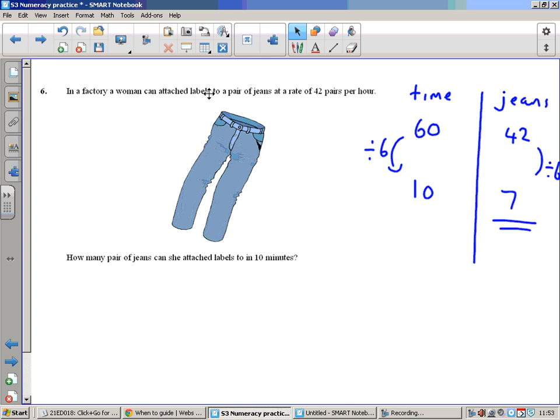In the factory, a woman can attach labels to a pair of jeans at a rate of 42 pairs per hour. How many pairs of jeans can she attach labels to in 10 minutes? So a whole hour she can do 42 pairs. Let's think about that in terms of minutes: 60 minutes, 42 pairs. Divide 60 by 6 gets 10 minutes. If we divide 42 also by 6, we'll get how many pairs you can do, which will be 7 pairs. Notice I've got a wee table there, I've double underlined my answer so it's really obvious what the answer to the question is.